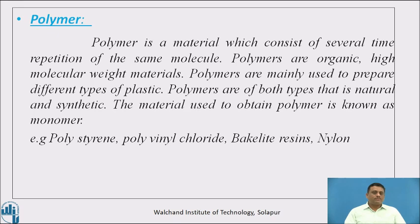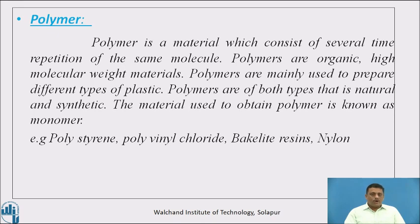Some examples of polymeric materials are polystyrene, polyvinyl chloride, bakelite resin, nylon, etc. Polymers are high molecular weight materials which show several repetitions of the same molecule. A monomer is a single molecule which on repetition forms a polymer.